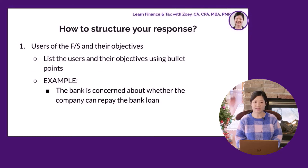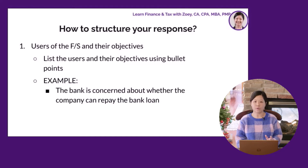To address this type of AO, the first step is to identify the users of the financial statements and their objectives. For example, the bank may be concerned about whether the company can make interest and principal payments. You can use bullet points to structure your discussion.